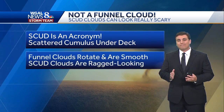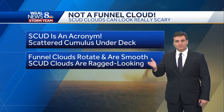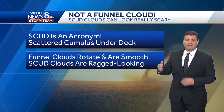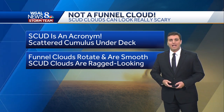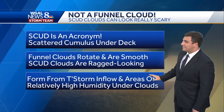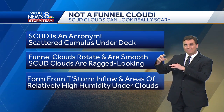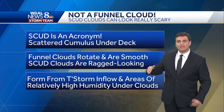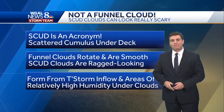They can look really scary, but the way you can tell the difference is funnel clouds rotate and are generally smooth in appearance. Scud clouds are very ragged looking — not very smooth. They kind of look like they were just thrown against the wall with splatters everywhere. They form from thunderstorm inflow in areas of relatively high humidity just under the clouds, almost like a little miniature cloud forming right under the base of the other one. They're usually detached as well — not together with the main clouds.